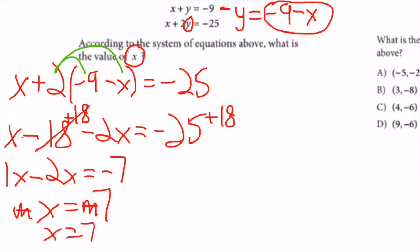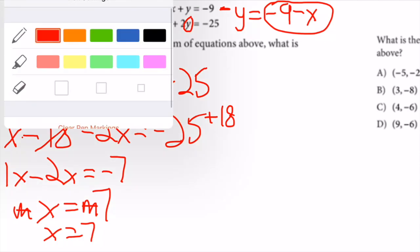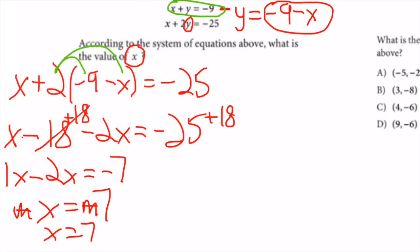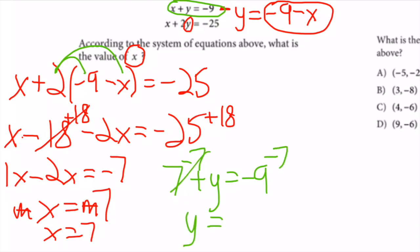Now if this equation asked for both x and y, I would take x = 7 and plug back into one of the equations. Plugging into the first: 7 + y = -9, so y = -16. But since they only asked for x, we saved ourselves some time by only solving for x first rather than y.